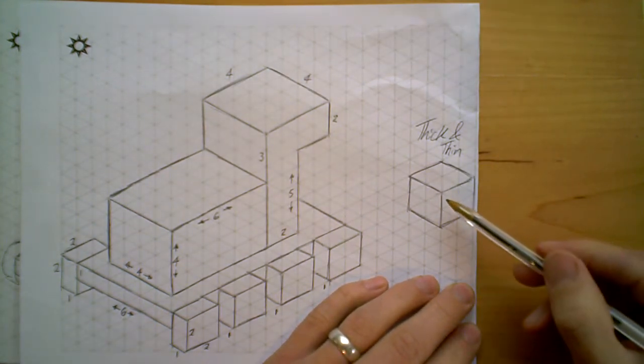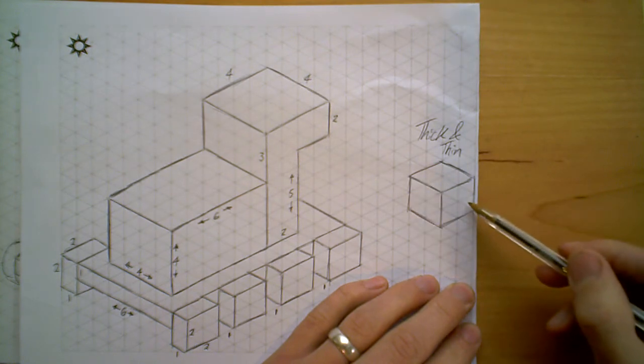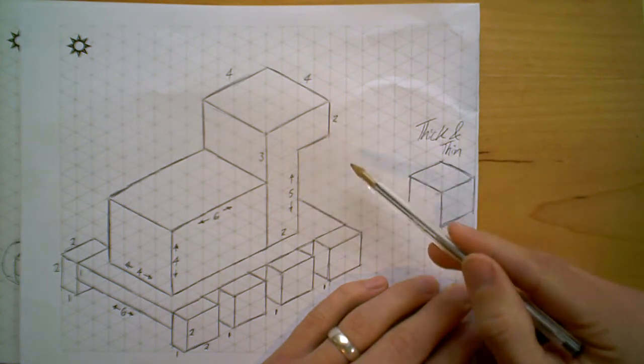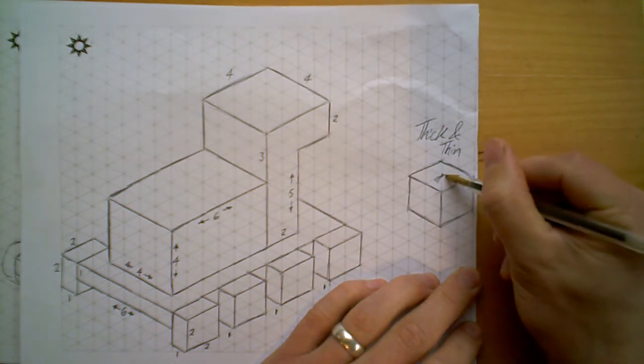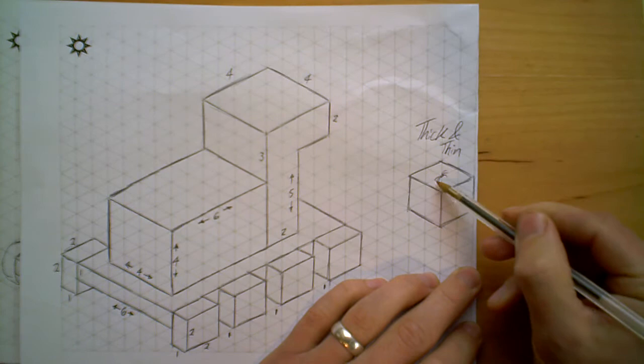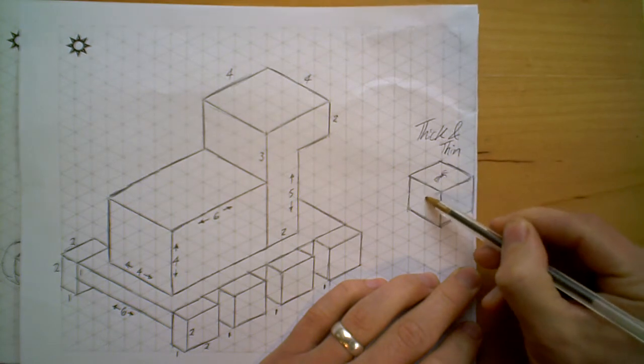What Thick and Thin does is, if we look at this shape here, we've got all the lines drawn out, single thickness. What we have to imagine is there's a spider on the top surface. Now, if this spider crosses to another surface and we can still see the spider...